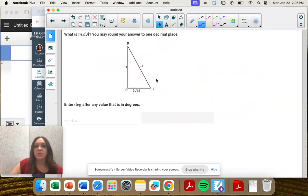That was the last one. So we want angle A. Let's label our sides. We have the hypotenuse, we have the opposite, and we have the adjacent.